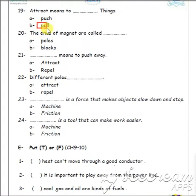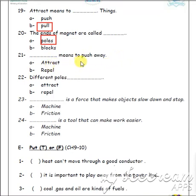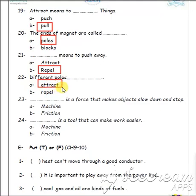Pull things. So push means repel. Excellent! Number 20: the ends of a magnet are called poles. Number 21: what means to push away? Repel. Excellent! Number 22: different poles attract or repel? Different poles attract — N with S or S with N.